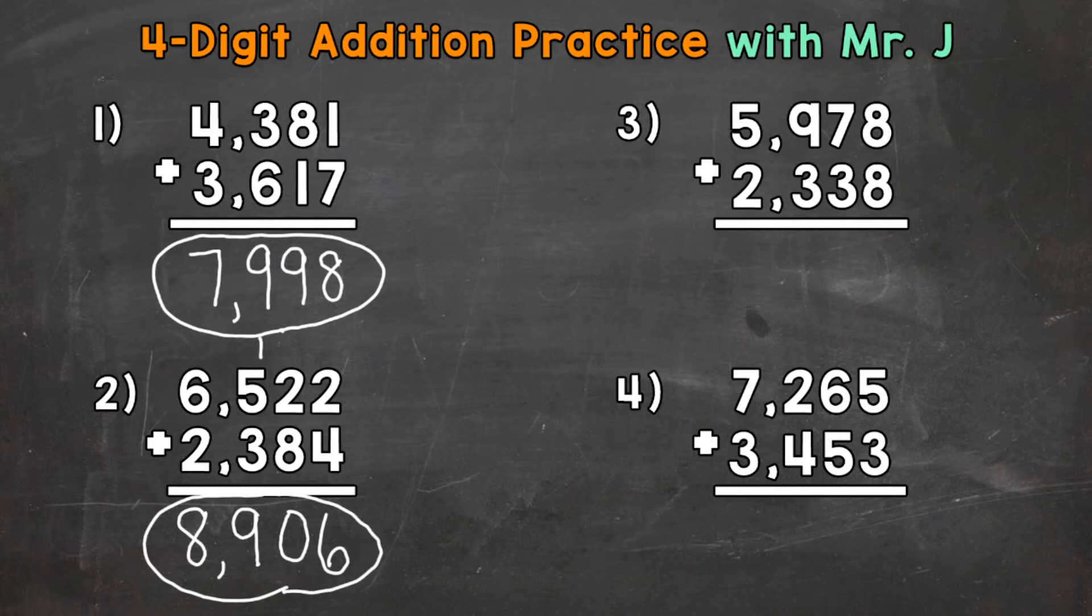Let's move over to number 3 where we have 5,978 plus 2,338. Start with the ones. So 8 plus 8 gives us 16. Put the 6 from 16 in the ones place. And regroup the 1 over to the tens. Now we have 1 plus 7 plus 3 in the tens place. So 1 plus 7 is 8. Plus 3 is 11. So put the 1 from 11 in the tens. And then regroup the other one over to the hundreds place.